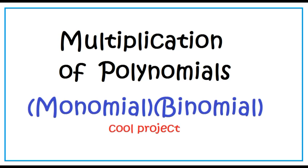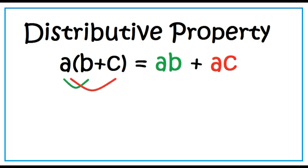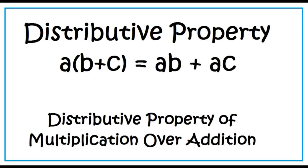Multiplication of polynomials: monomial times binomial. This property is useful in multiplying a monomial and a binomial. The distributive property states that A times the quantity B plus C is equal to A times B plus A times C. The other name for this is the distributive property of multiplication over addition.